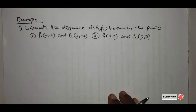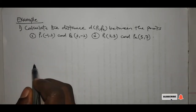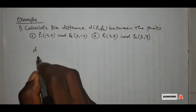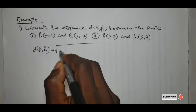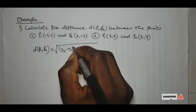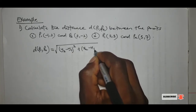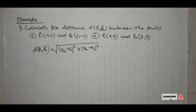Hi, welcome to this lesson. In our last lecture we had derived the formula for calculating the distance between two points P1 and P2, and that formula was given as the distance between P1 and P2 is equal to the square root of (y2 minus y1) all squared plus (x2 minus x1) all squared. Today we shall demonstrate how this formula can be applied in calculating the distance between any two points.